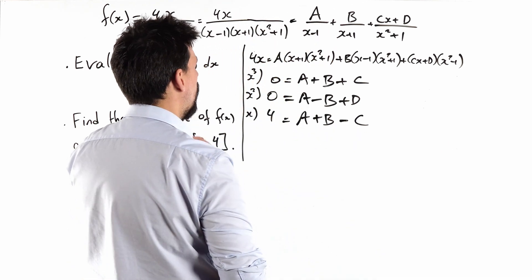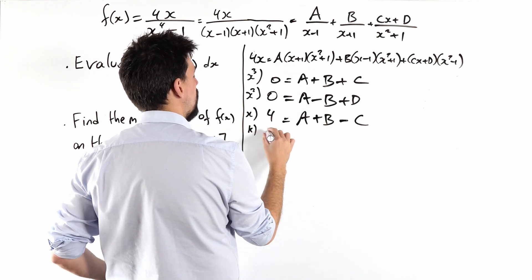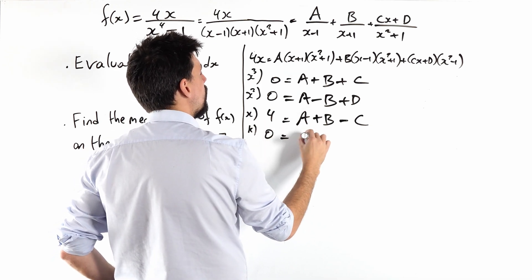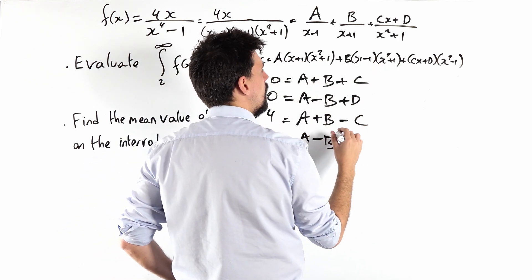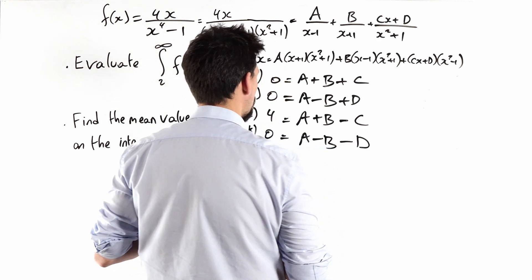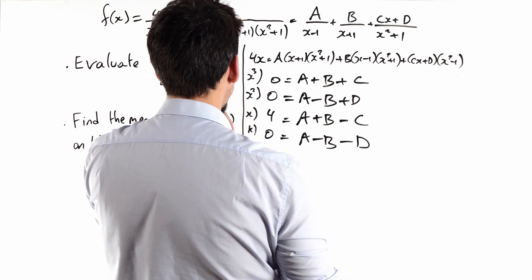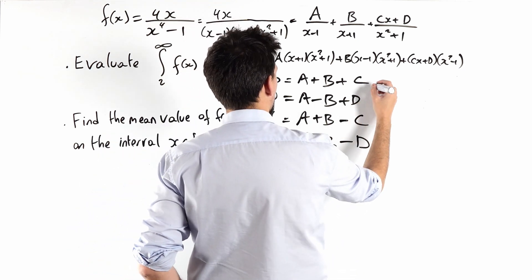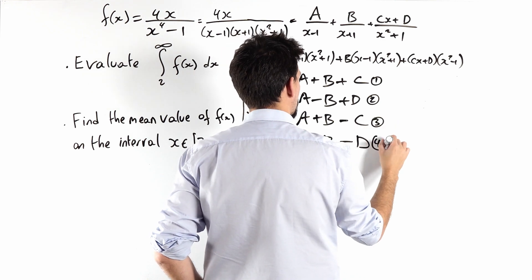And now it's just a case of... and finally, just the constants. I don't know, call it k, whatever you want. I should get no constants. And that will be a times 1 times 1, minus b, and then minus d. So equation 1, 2, 3, 4.